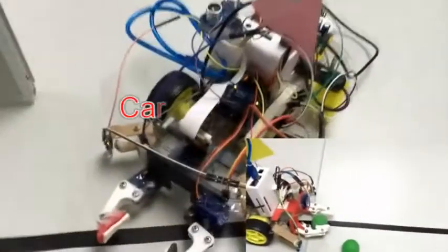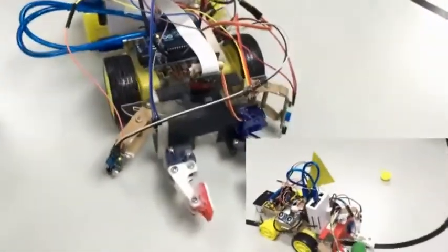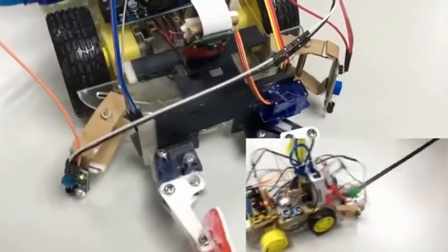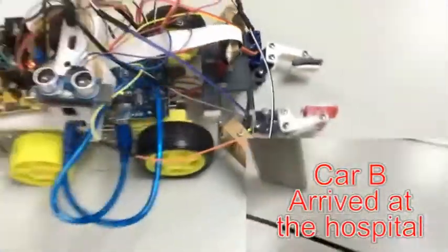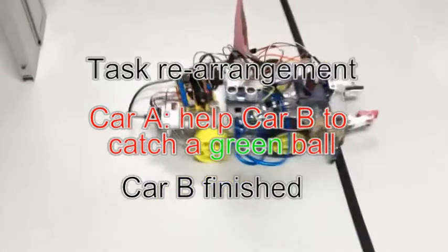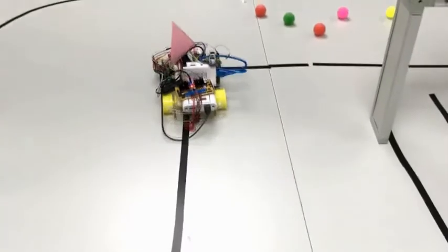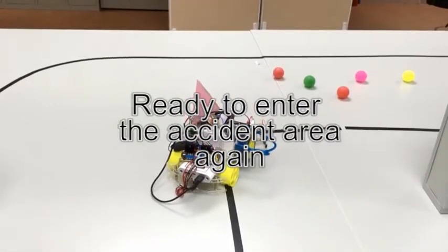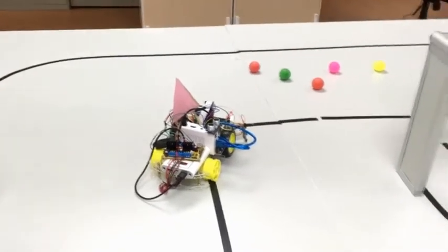When car A finishes its job, the task center finds it available, so the center asks it to turn around and rearranges the task, letting car A help car B to catch the last green one. Here car A is ready to enter the accident area again. Now it turns into automatic drive mode and tracks the last green ball. Car A catches the ball and the whole job is done.